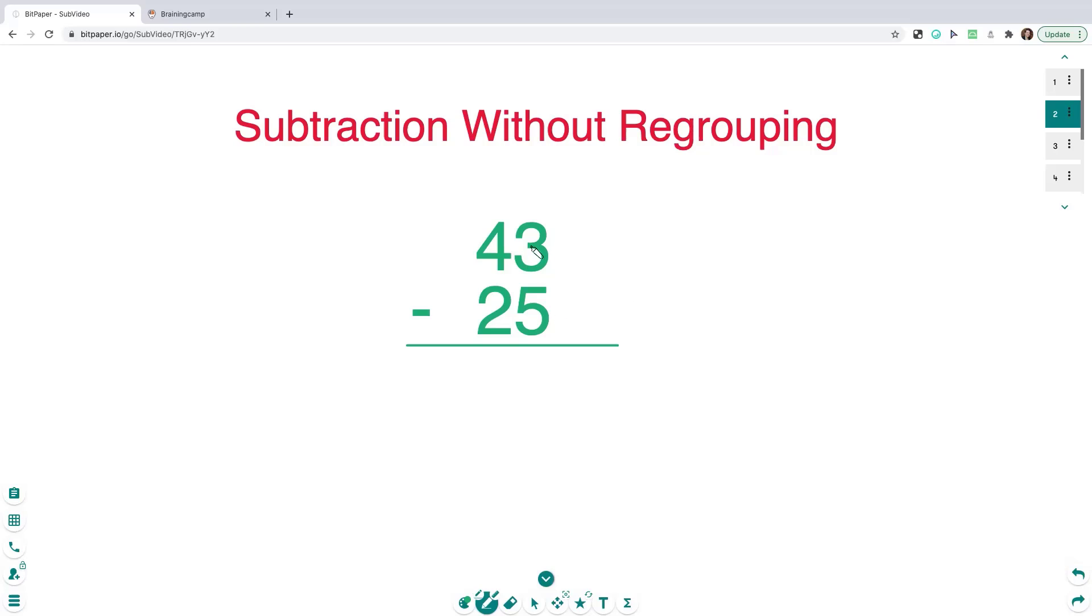Instead of starting in the ones, we're going to go over here and start in the tens place right here. So if you're showing this to your students or your children, you can just briefly review with them, what is the value of this 4? Well, it's in the tens place, so that is worth 40, and what is the value of this 2? It's also in the tens place, so that is worth 20. So you're left with finding the difference between 40 and 20, or 40 minus 20 is 20.